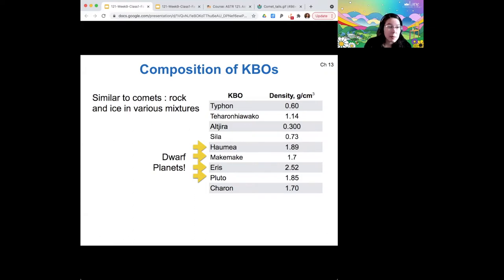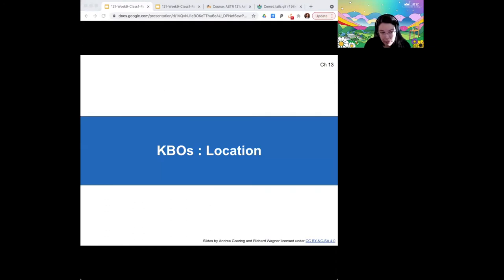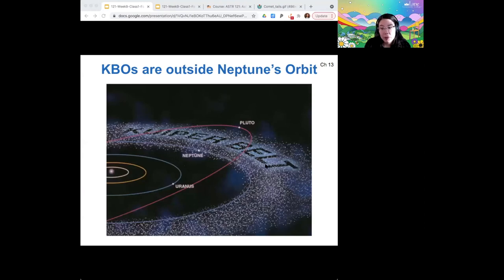So the Kuiper Belt, like I mentioned, is out farther away from the sun than the asteroid belt. They are outside of Neptune's orbit. And that's why they're sometimes called trans-Neptunian objects because their orbit can take them outside and inside of Neptune's orbit.